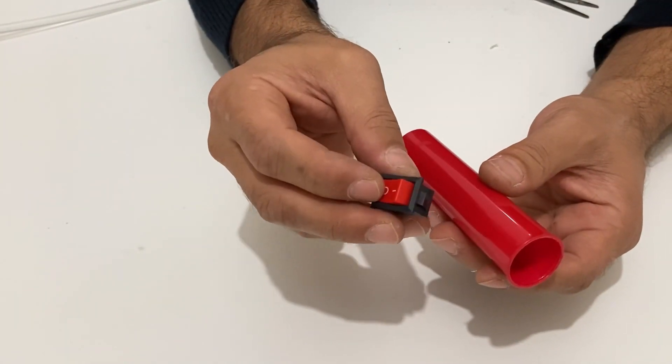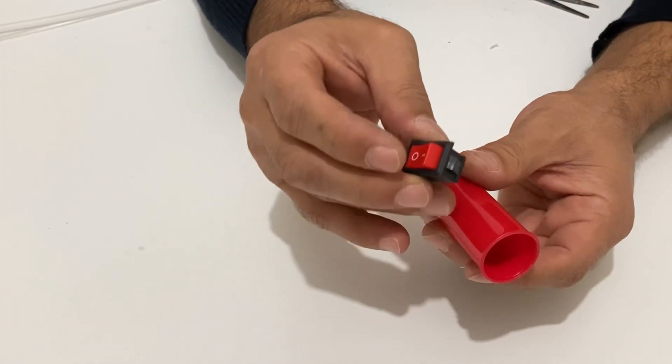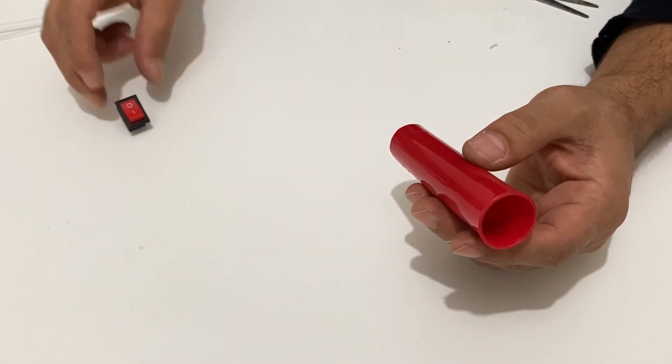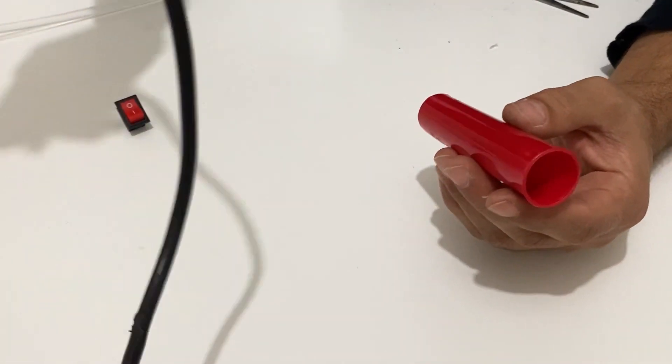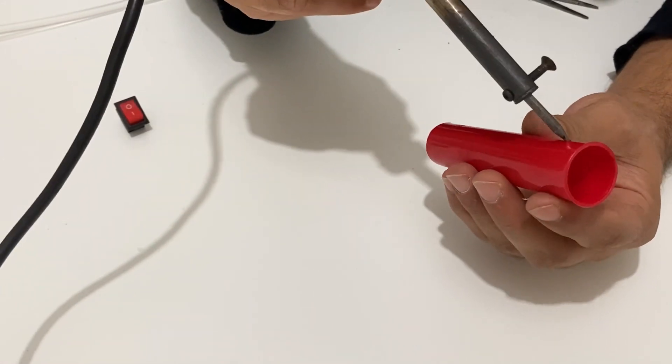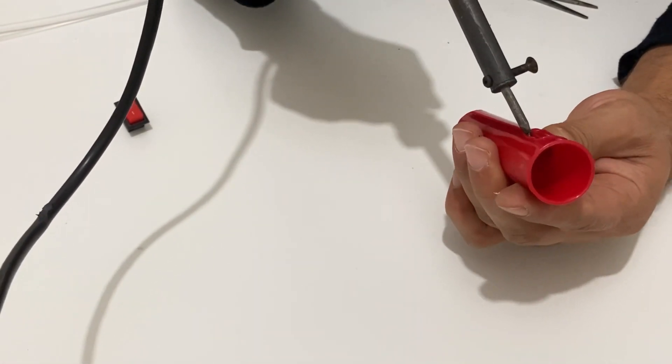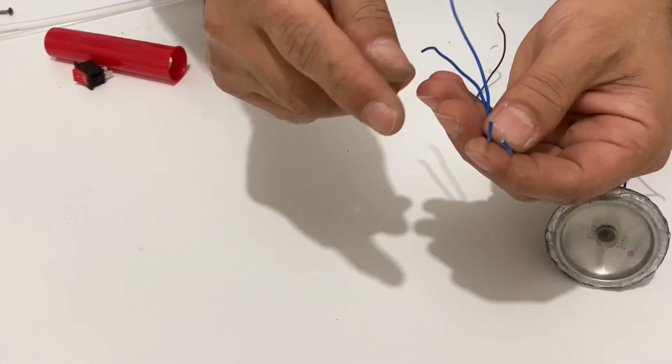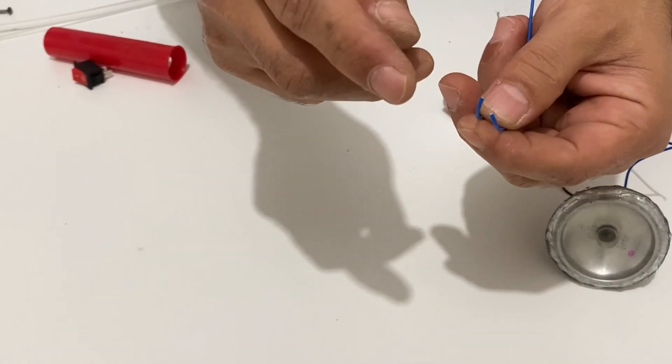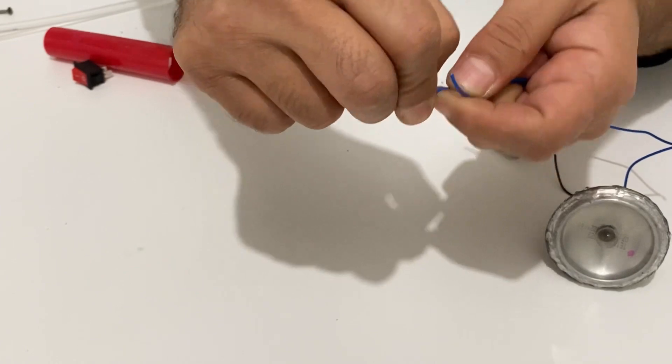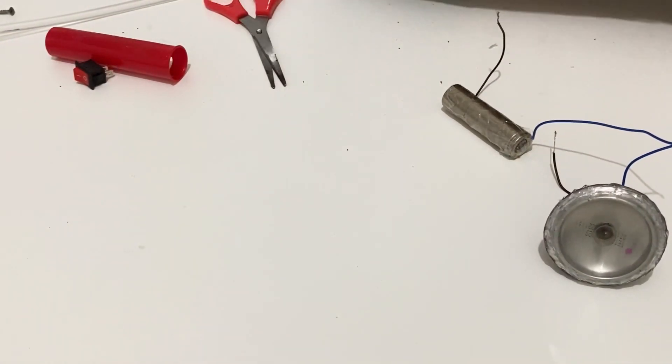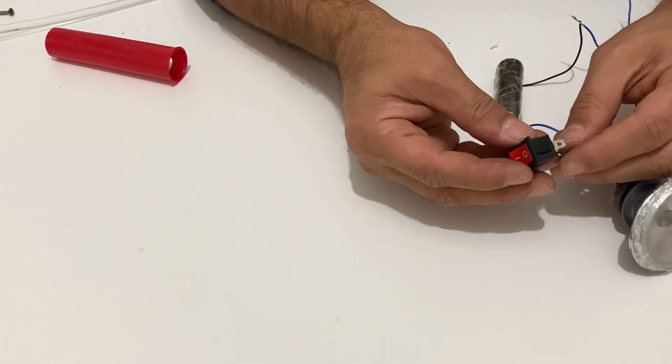I'm going to use this on-off switch and I will put the switch onto the plastic tube. I will just make a hole for that. I'm going to use extra two wires and momentarily I will tell you why I'm going to use these wires. Just watch and I will tell you. Now make the switch connections.